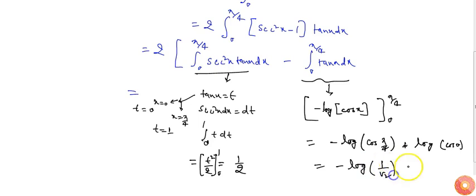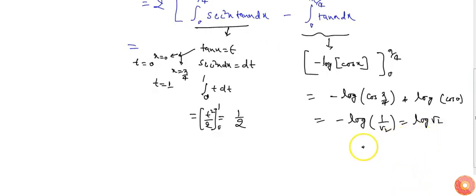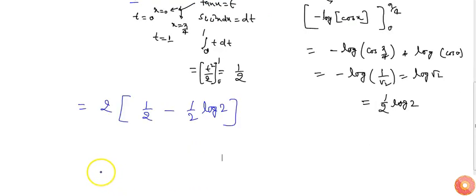From here I will get minus log cos π by 4 is 1 by root 2, or I can say log root 2, which is 1 by 2 log 2. So our answer will be 2 times 1 by 2 minus 1 by 2 log 2, so this will be 1 minus log 2, which is our RHS, right hand side.